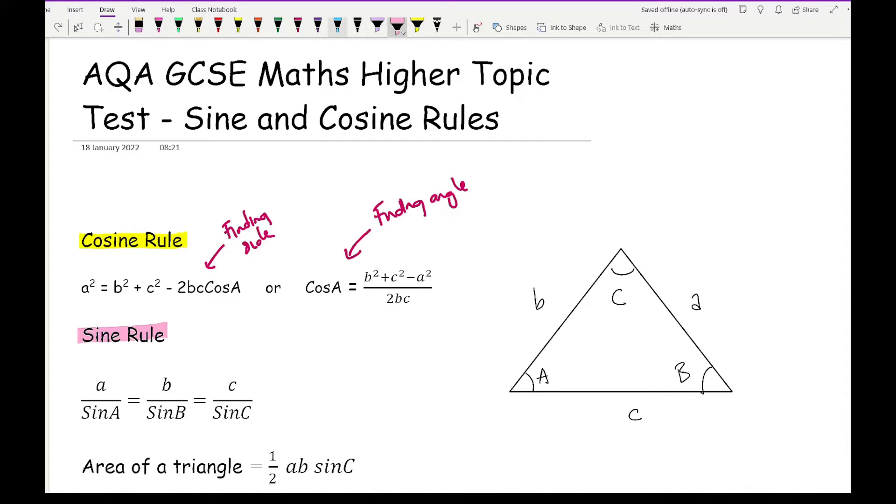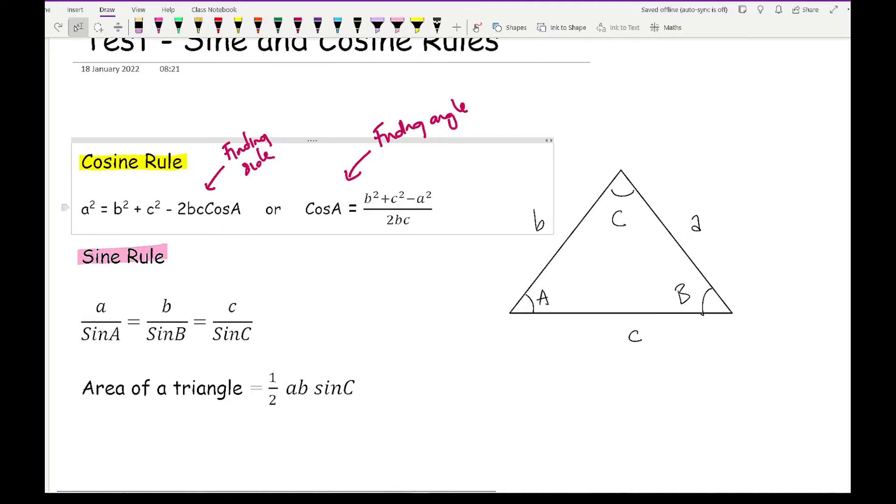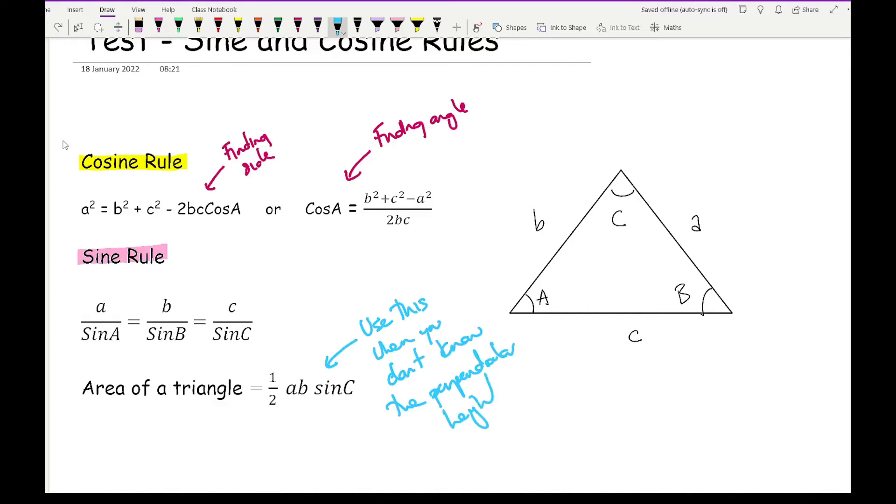Now we've also got a formula that's always often forgotten which is the area of a triangle which is half ab sine c. Now we use this formula when you don't know the height, so use this when you don't know the perpendicular height of the triangle. Otherwise you just use base times height divided by two. So you tend to find that this formula comes into play generally at the latter part of a higher paper because obviously typically you'd be using base times height divided by two.